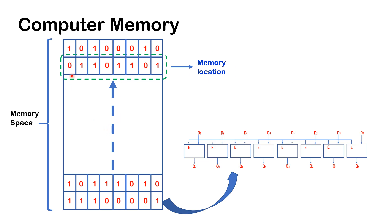Each memory location in the memory space has what we call a memory address. For example, this could have an address of FBBFF (H), where H stands for hexadecimal. Each location in memory would have a unique address. We'll come back and talk more about memory locations in later videos. That's all for this video — thank you for watching, see you in the next one.